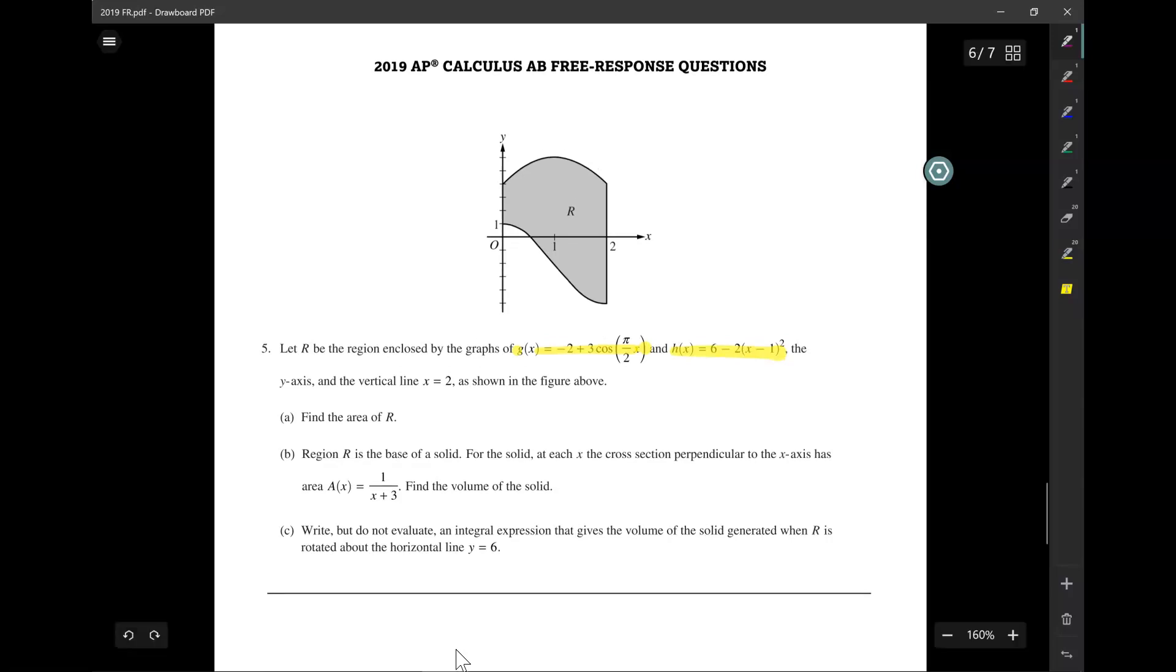Okay, so for area, I want to do the upper function minus the lower function. And you see here one of these is a cosine of x and the other one is a parabola 6 minus 2x minus 1. This parabola has a vertical shift of y equals 6, right? So the vertex is at y equals 6, which is here. So that must be h of x, whereas this one is the cosine, g of x.